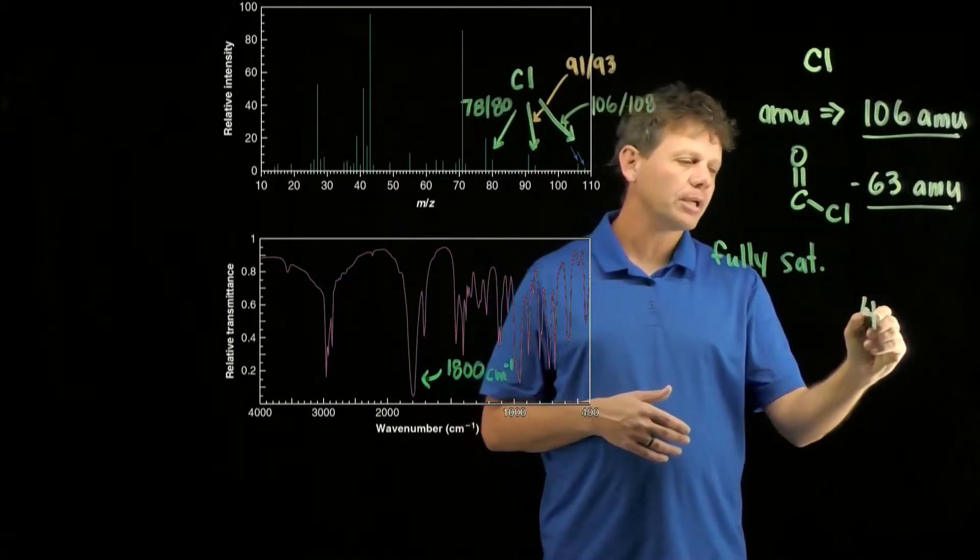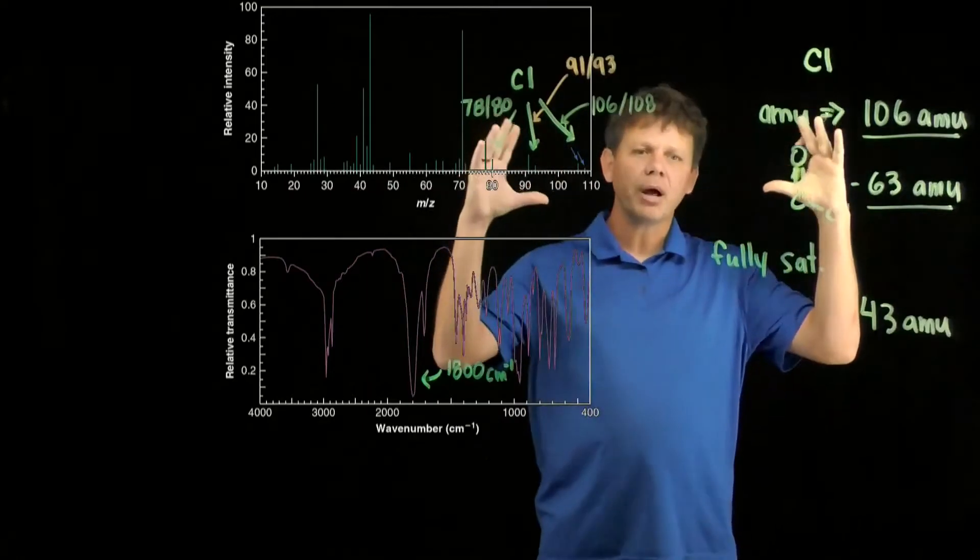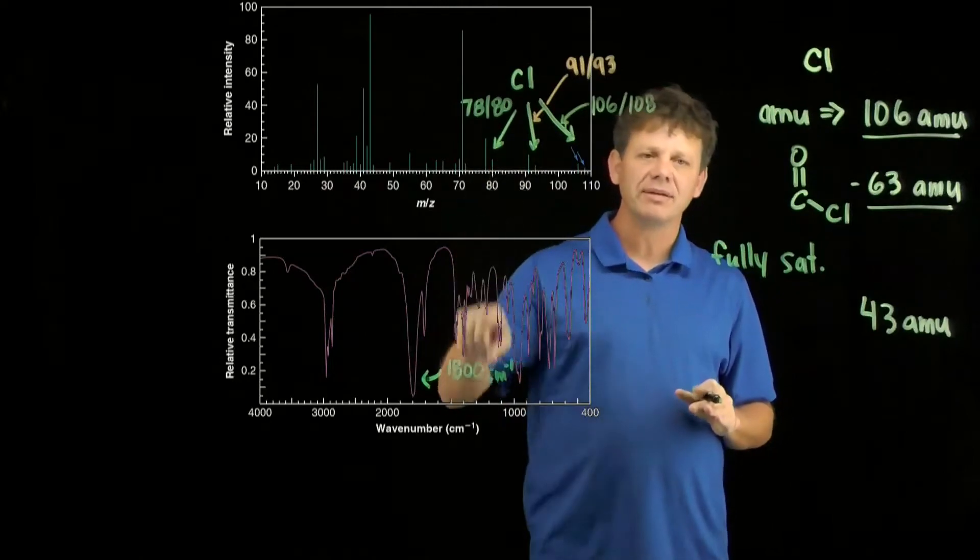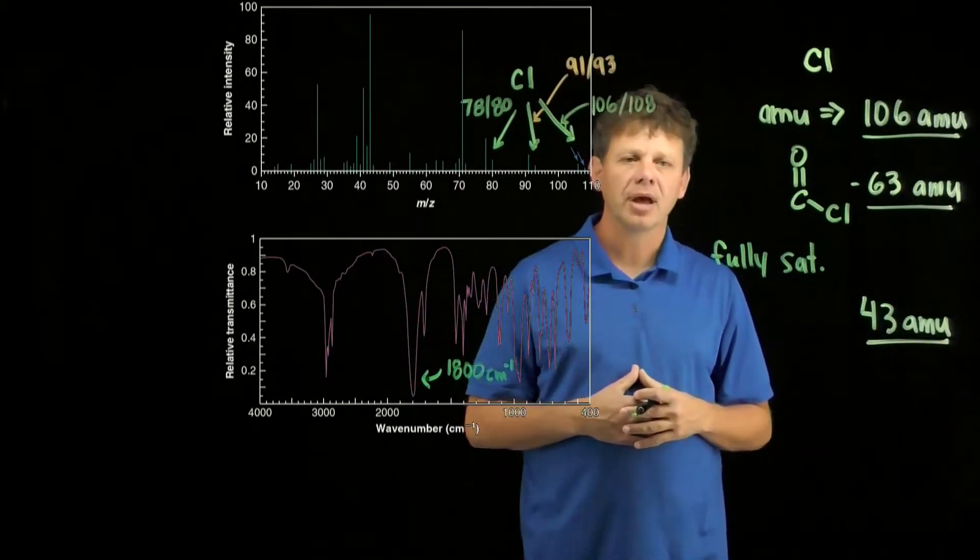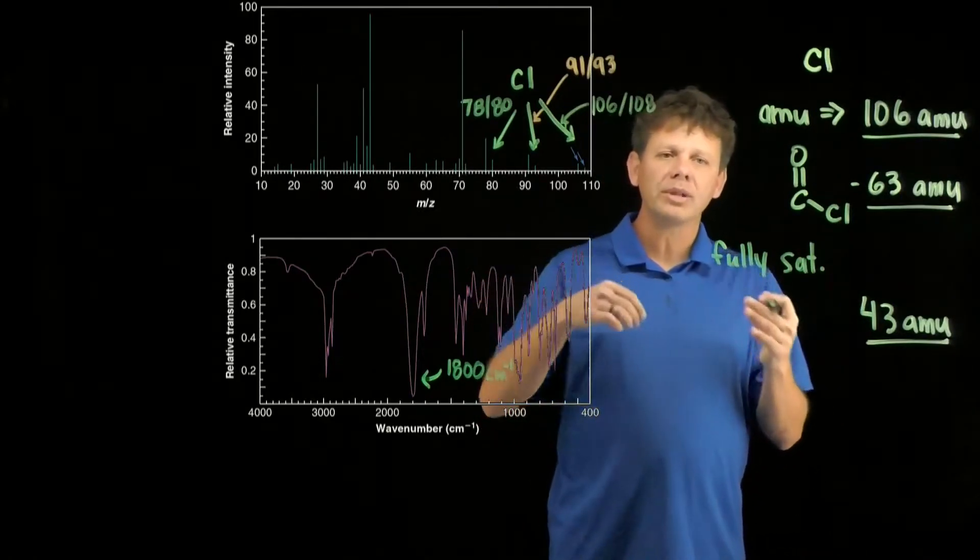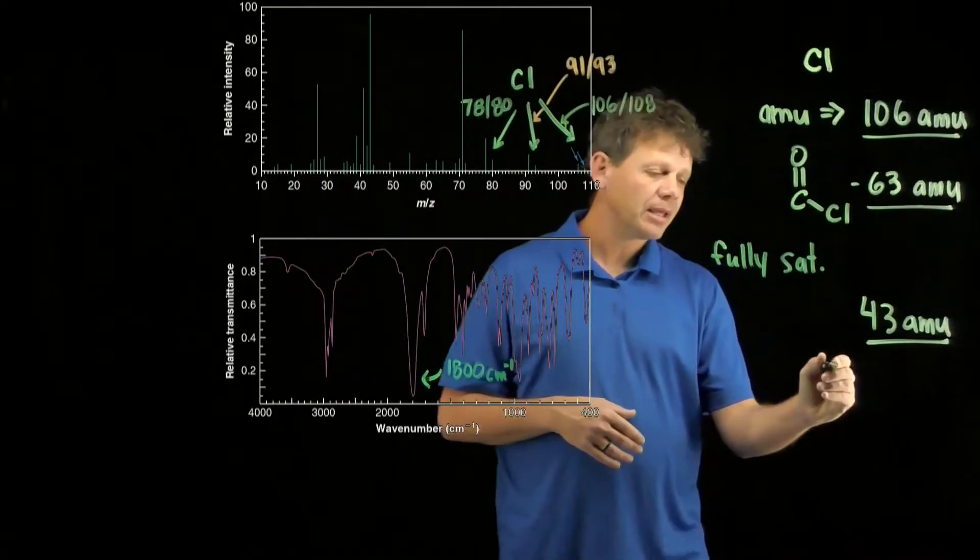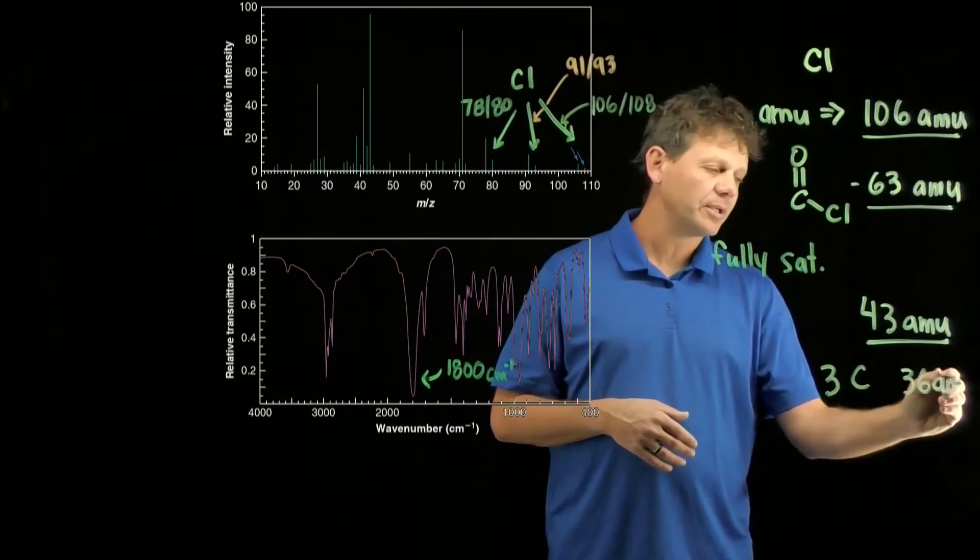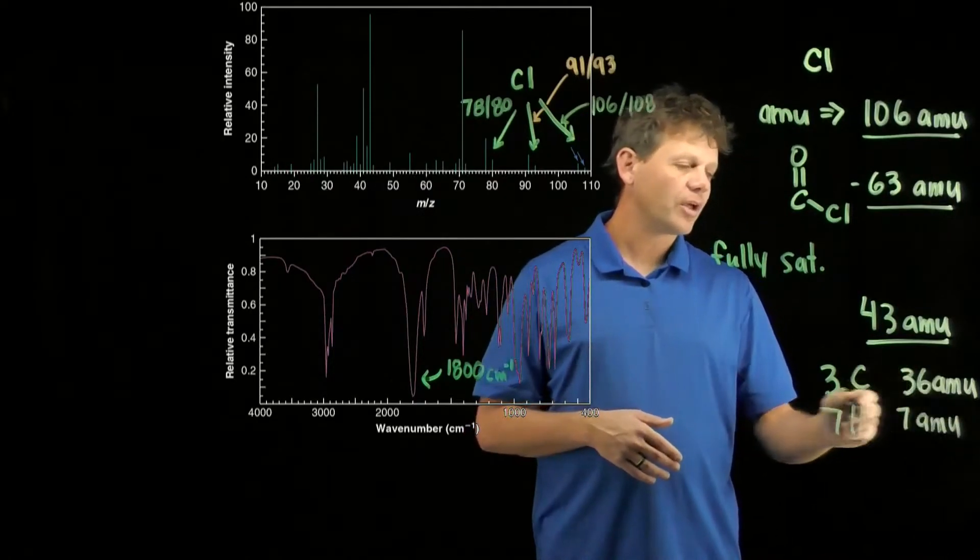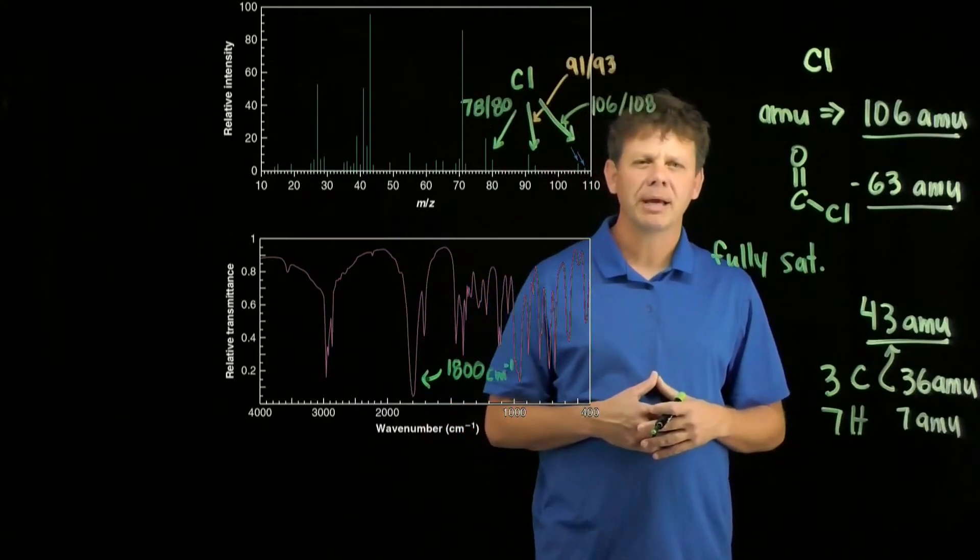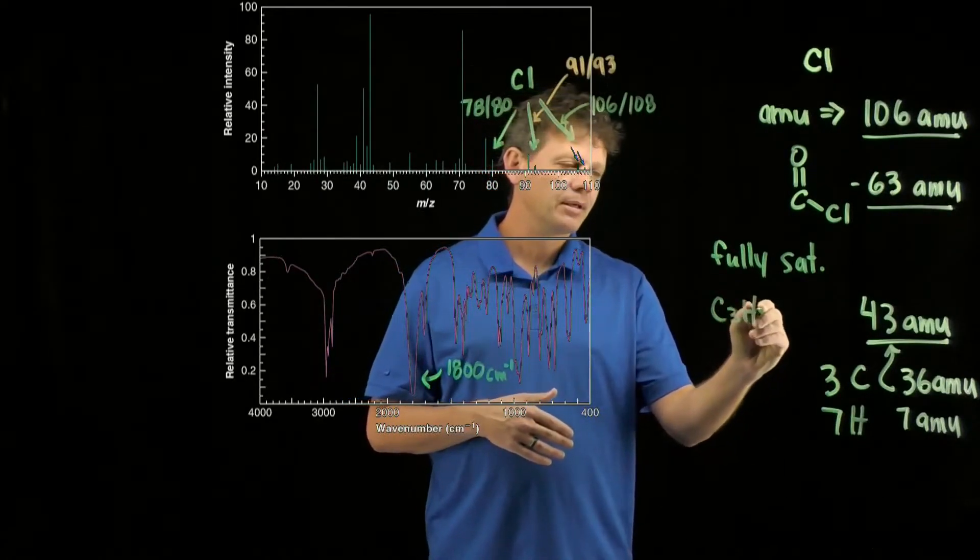If we subtract those, we get a remainder of 43 atomic mass units. That helps us because now we're simplifying. If it has an acid chloride, then all we need to account for is the remaining 43 atomic mass units. Assuming only carbons and hydrogens with no unsaturation, the only way to make 43 is to have 3 carbons for a total of 36 atomic mass units and 7 hydrogens for a total of 7 atomic mass units. The other piece of the molecule is this C3H7 group.